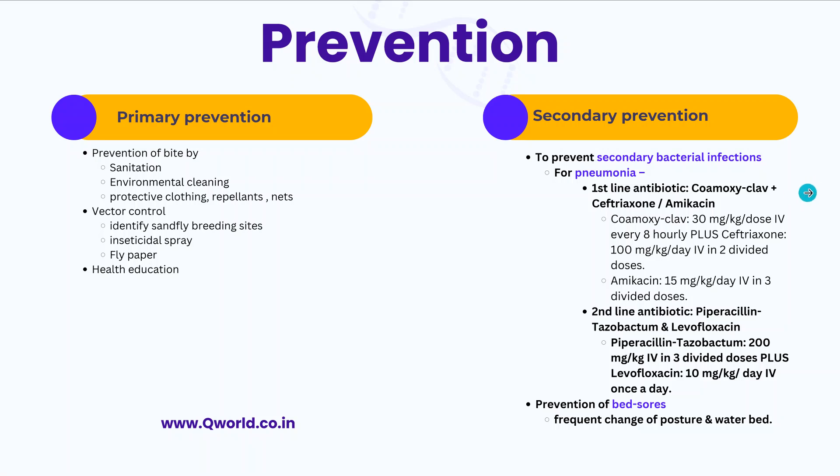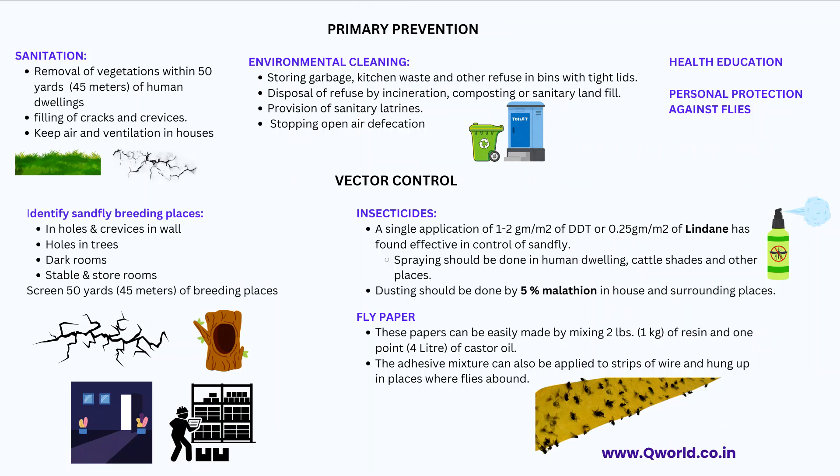For primary prevention measures in sanitation: remove all vegetation within 50 yards (about 45 meters) of human dwellings. Fill all cracks and crevices in houses and rooms. Keep good air circulation and ventilation. Always clean the surrounding environment. Store garbage or kitchen waste in tight-lidded bins. Dispose of refuse by incineration or sanitary landfill. Provide sanitary latrines and avoid open defecation. Educate people, patients, relatives, and the overall community about Chandipura virus, and promote personal protection against flies.